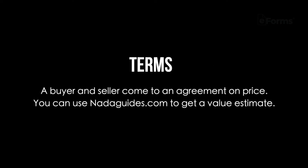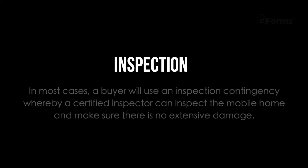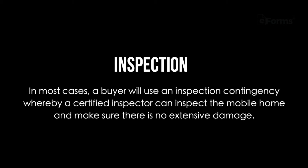A buyer and seller come to an agreement on price. You can use nadaguides.com to get a value estimate. In most cases, a buyer will use an inspection contingency whereby a certified inspector can inspect the mobile home and make sure there is no extensive damage.